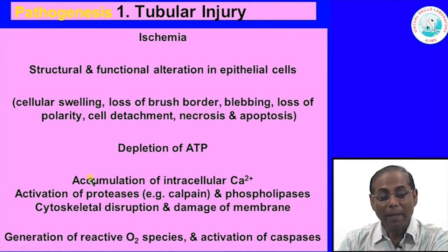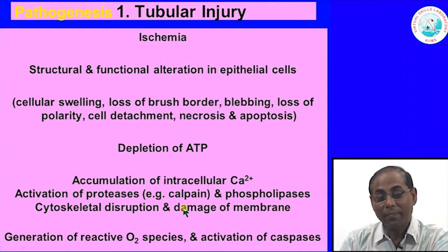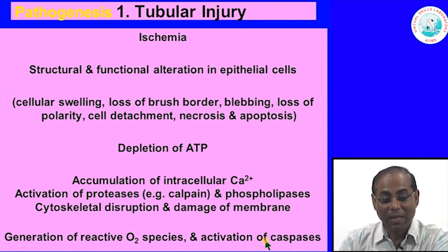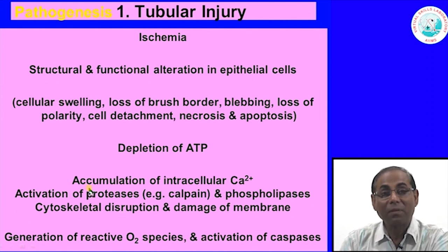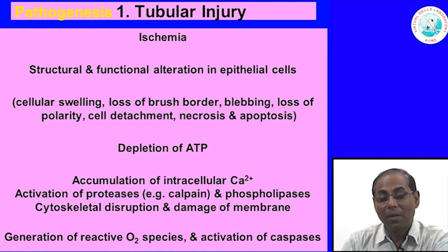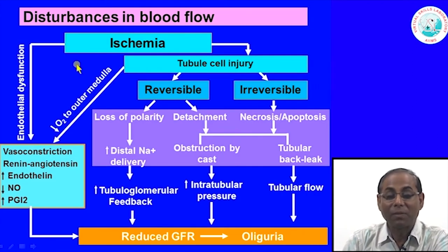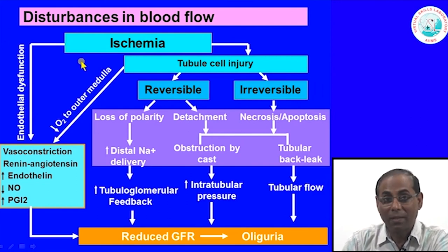The structural changes are caused by the molecular mechanisms described. Finally, all of this leads to generation of reactive oxygen species and activation of caspases, which causes apoptosis as well as necrosis of these tubular epithelial cells. This is the pathogenesis of tubular injury secondary to ischemia.